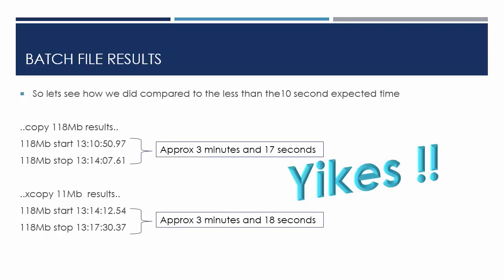So batch file results - what does it look like? This is exactly what's in that text file that got created. It says copy, then start time, stop time - these are minutes, so 1:10 p.m. to 1:14 p.m. - approximately three minutes. The xcopy was also approximately three minutes for a 100-meg file. And the answer was 'yikes,' because we weren't expecting that - we expected it to go a lot quicker. With this particular example, the client was baselining what they had because they wanted to move to a new circuit that was supposed to be better. So I said, let's just do this and find out what it looks like.